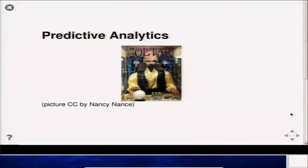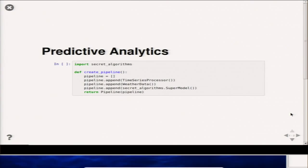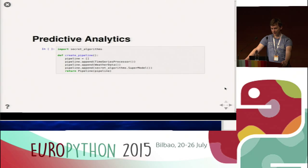First, a little bit about me and why I want to talk about this topic. My job is doing predictive analytics, which basically means predicting the future. But actually it doesn't look anything like that — it looks more like this: a machine learning pipeline with data pre-processing, external data sources, and some super secret algorithms which produce a machine learning model.